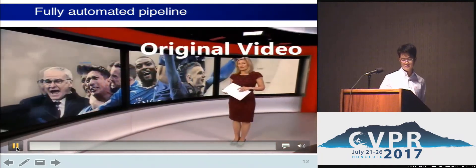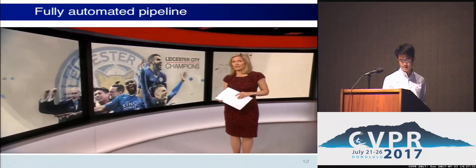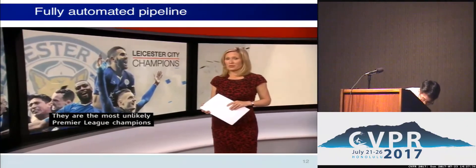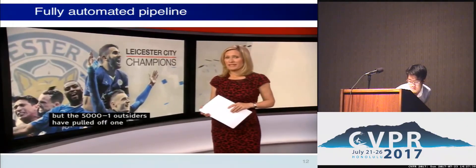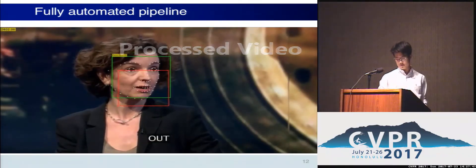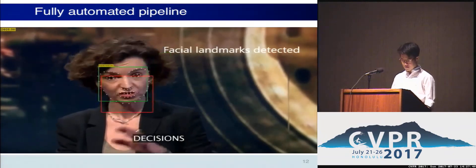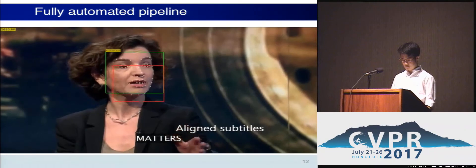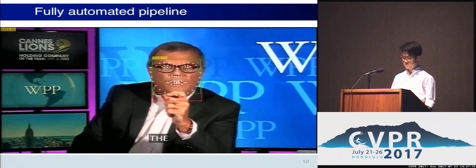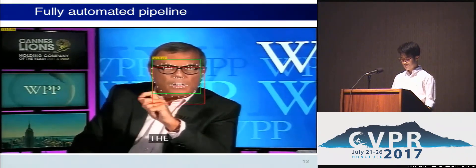Here is a video from our dataset before and after processing. It shows BBC News clips covering topics such as Leicester City winning the Premier League as 5,000-to-1 outsiders, court decisions on battlefield judicial scrutiny, and a discussion about powerful brands in football.